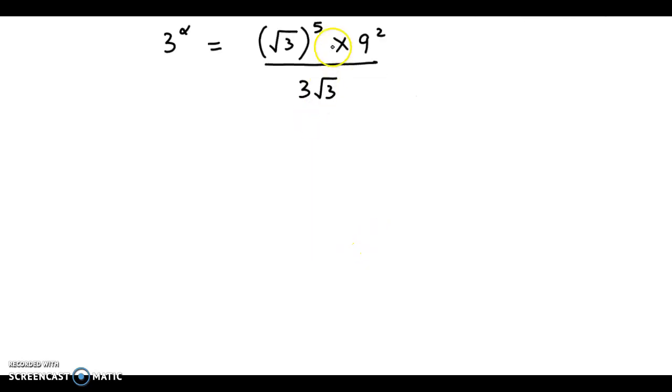Now root 3 could be replaced by 3 raised to half, the whole thing raised to 5 into, now 9 could be replaced by 3 square raised to 2. Now in the denominator we have 3 root 3.